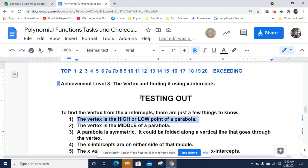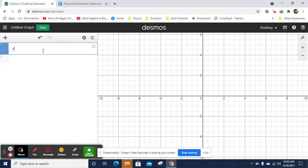The vertex is the high or low point of a parabola. I'll show you what I mean. Y equals x squared plus 3x plus 2. So right here, that's the low point. That's the vertex.